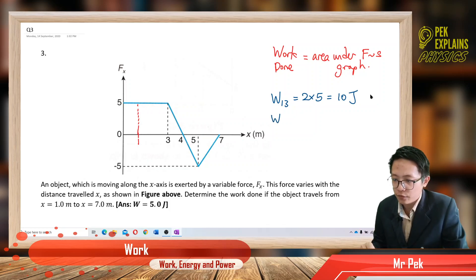And then work done from 3 to 4 is a triangle. So it's half times 1 times 5, you get 2.5 joules.